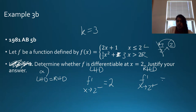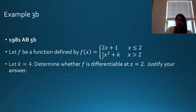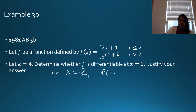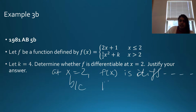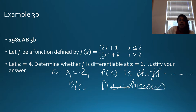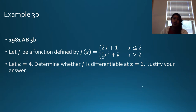Since the left-hand derivative equals the right-hand derivative, f(x) is differentiable at x = 2. Don't forget to always include continuity in your answer: it is continuous, and the left-hand derivative equals the right-hand derivative.